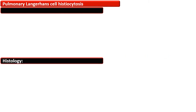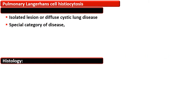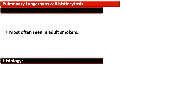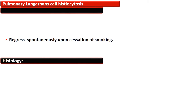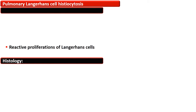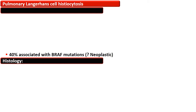Pulmonary Langerhans cell histiocytosis presents as an isolated lesion or diffuse cystic lung disease. It is a special category usually seen in adult smokers, and it regresses upon cessation of smoking. It is considered a reactive proliferation of Langerhans cells, but 40% of cases are associated with BRAF mutations, so the etiology is still questionable.